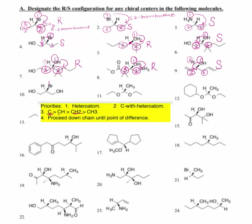Number ten: the bromine is CIP number one. This time I have a carbon, a carbon, a carbon, and two OHs. This does not have a chiral center — it is not an asymmetric center because it doesn't have four different groups. It has a CH2OH on both sides. So number ten has no chiral center.